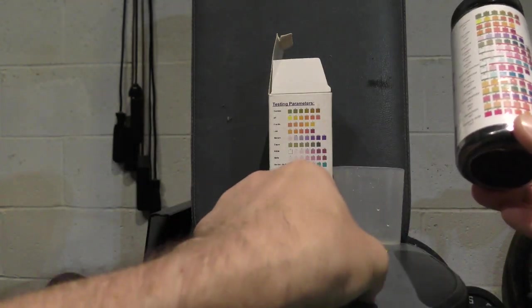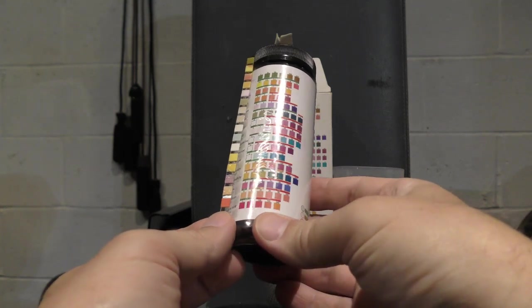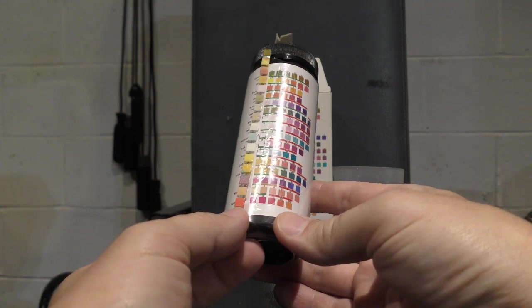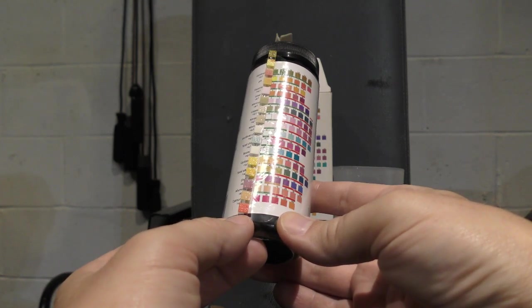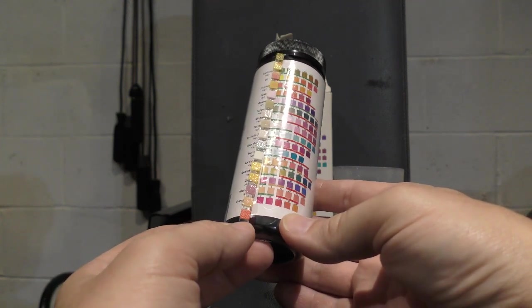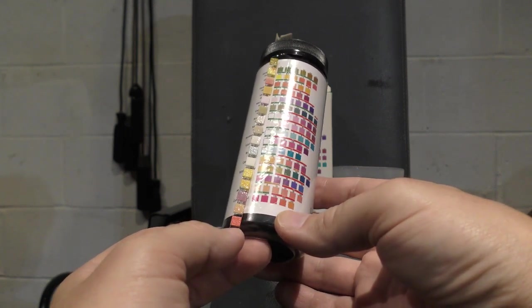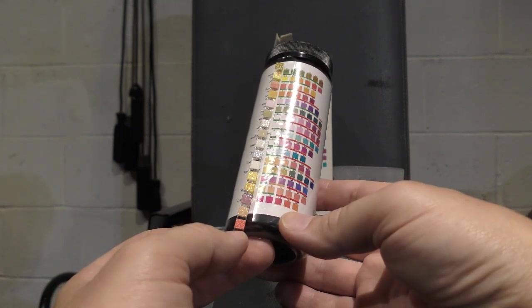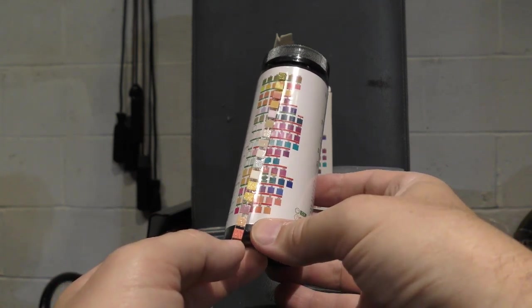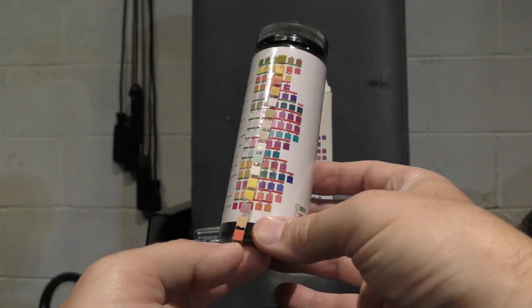Now we'll take it and we'll compare the water that was taken out of the dehumidifier. Cyanuric acid is also high. Residual chlorine is high. It looks like nitrate and nitrite are up there again as well, and then the hardness is about midway through the scale.